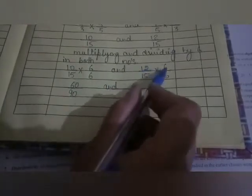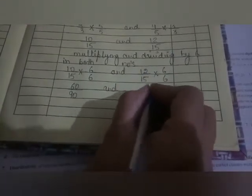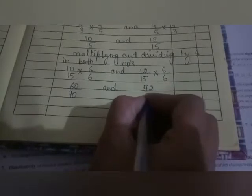Now multiply 10 by 6, we will get 10 sixes are 60. And on multiplying 15 by 6, we will get 15 sixes are 90. And same as it is, 12 sixes are 72, and 15 sixes are 90.